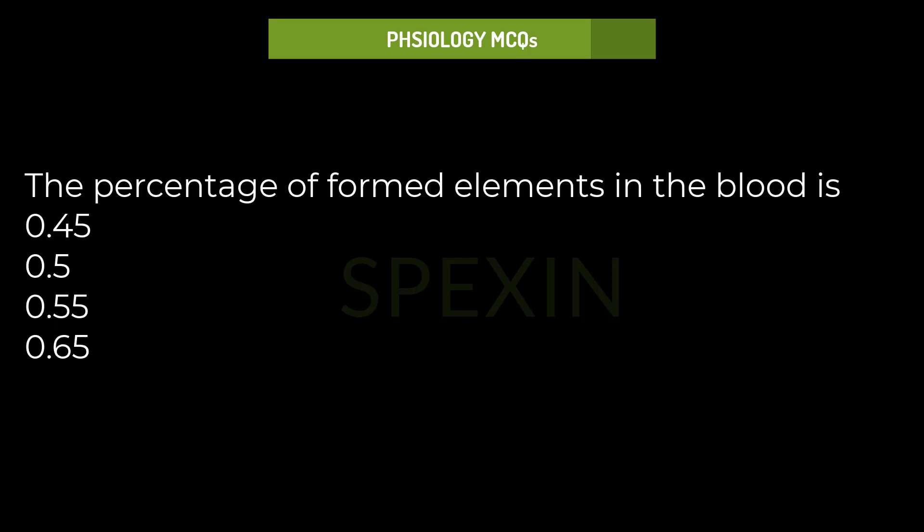The matrix of blood is known as: Plasma, Serum, RBC and WBC, WBC and platelets. Correct answer: Plasma.